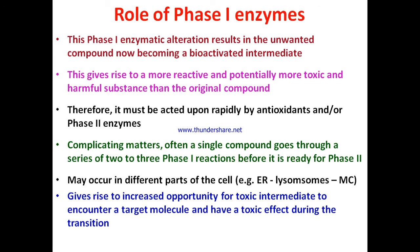Often a single compound goes through a series of two to three phase one reactions before it is ready for phase two, depending on the chemical nature of the xenobiotic. These reactions may occur in different parts of the cell — endoplasmic reticulum, lysosomes, mitochondria — increasing the opportunity for a toxic intermediate to encounter a target molecule and have a toxic effect during the transition.